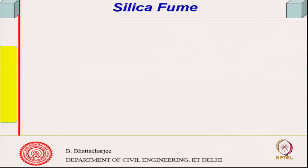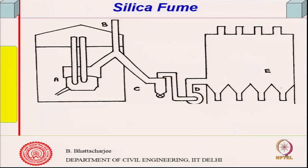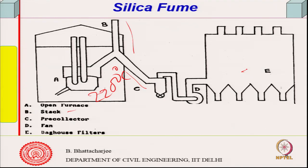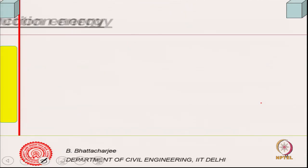Following fly ash, we have silica fume. As you can see from this diagram, this is the open furnace, and this is a stack through which the fume goes out and is collected here. There is a fan which blows it, and the fumes that come in condense to ambient temperature. They are then filtered and collected — the fine ones are collected. That is silica fume.